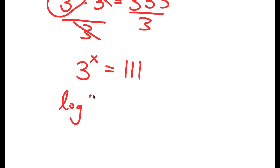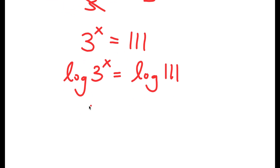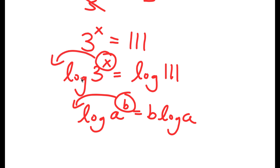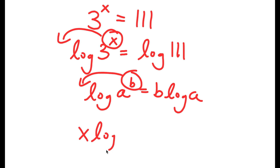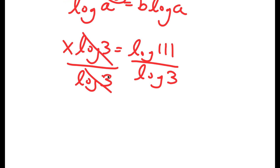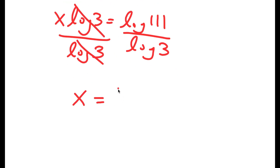Now if I take the log on both sides, I get log of 3 to the power of x is equal to log 111. Using the log power rule, if I have log a to the power of b, I can move b to the front: it equals b times log a. So log of 3 to the power of x becomes x times log 3 is equal to log 111. Dividing both sides by log 3, I get x equals log 111 over log 3.